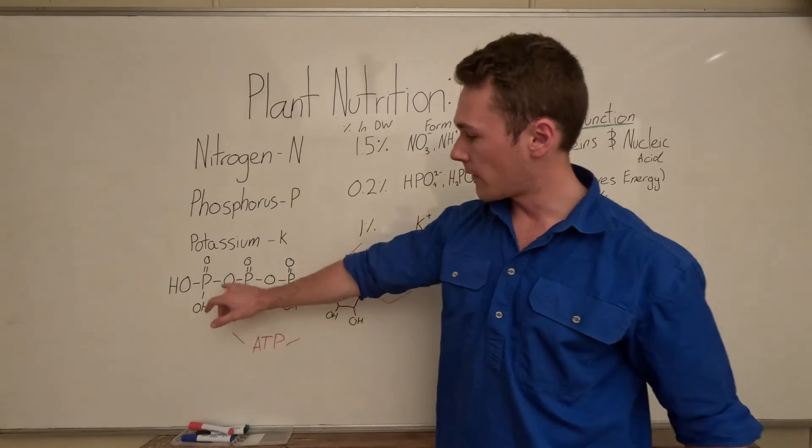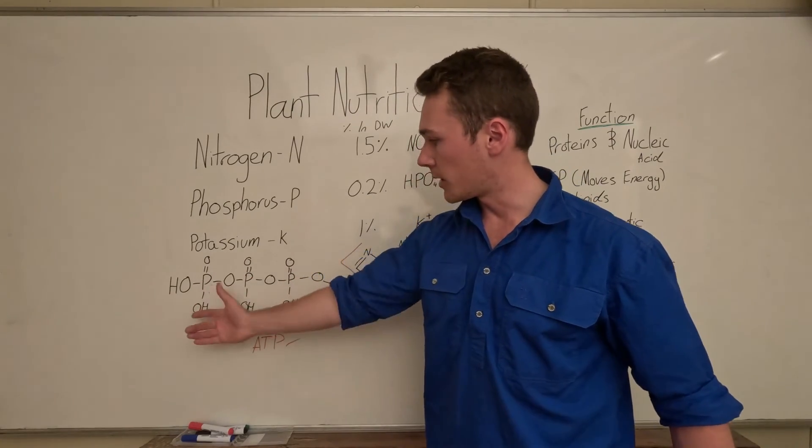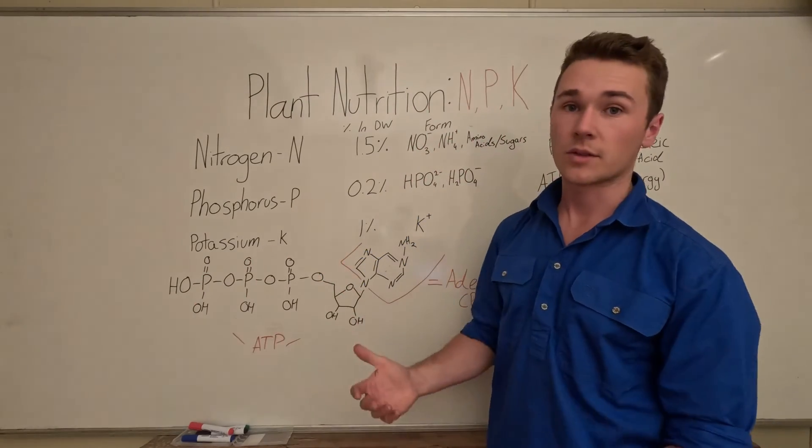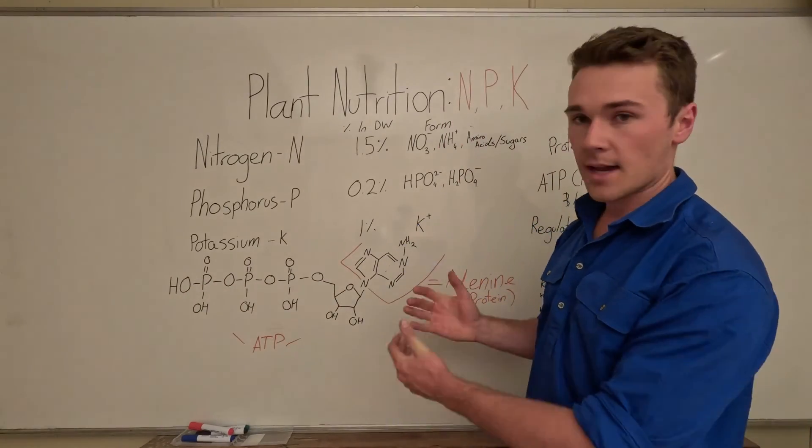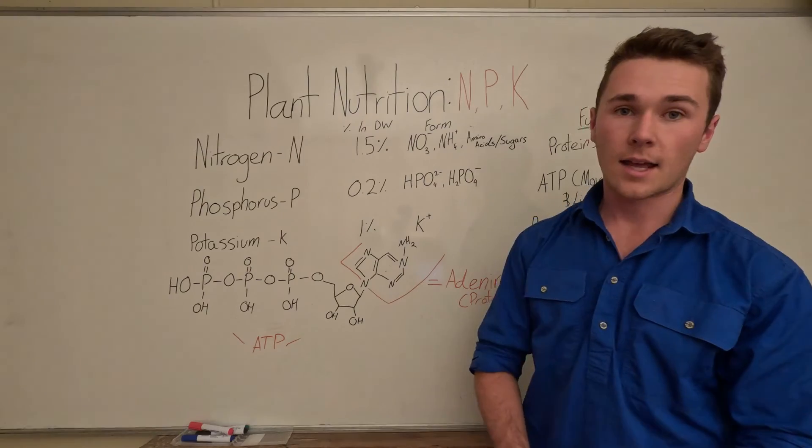In terms of phosphorus, we have our phosphate molecule here. We need phosphorus to make those molecules. If we don't have one of those, we can't make ATP, and then we can't move energy around our cell.